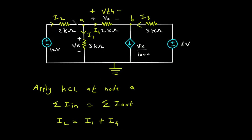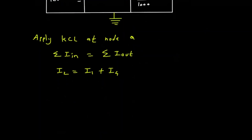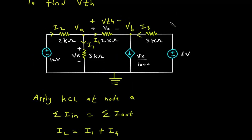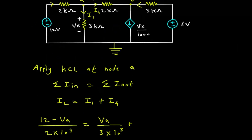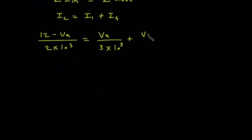Now I2 in voltage form: let's say this voltage is VA and this voltage is VB. So I2 = (12 − VA) / 2kΩ. I1 = VA / 3kΩ, that is VA divided by 3 × 10³. Then I4 = (VA − VB) / 2kΩ, that is (VA − VB) divided by 2 × 10³.